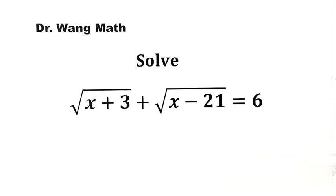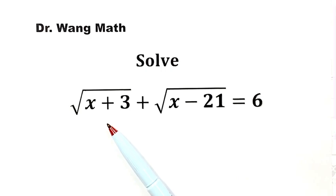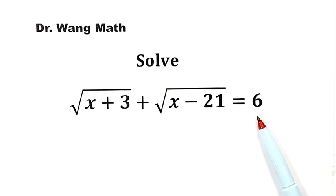In this video, we can solve this equation: square root of x plus 3, plus square root of x minus 21, equals 6. For this type of equations, the general method is squaring both sides first. But here, we'll use a different approach to solve this equation. First, let's label this one as equation one.